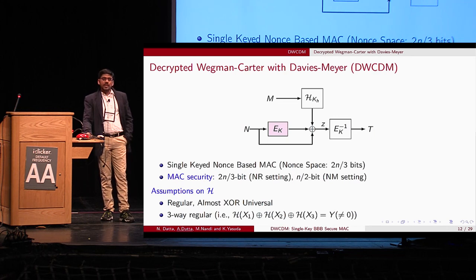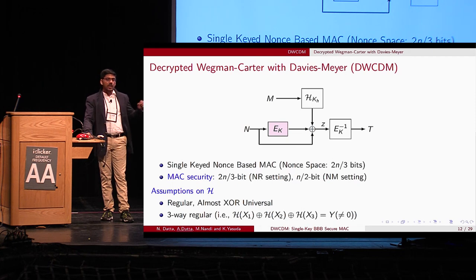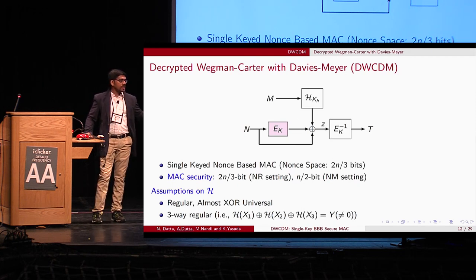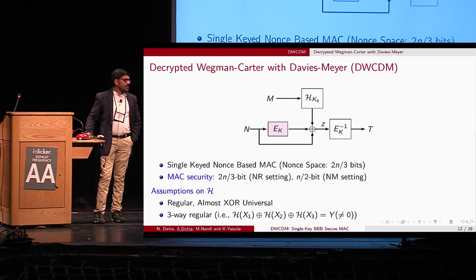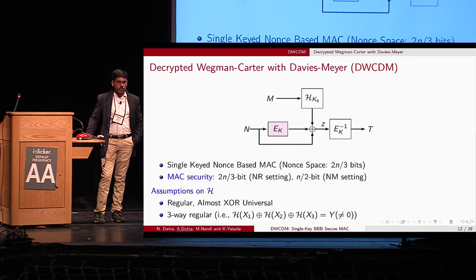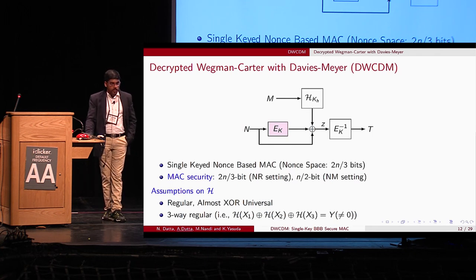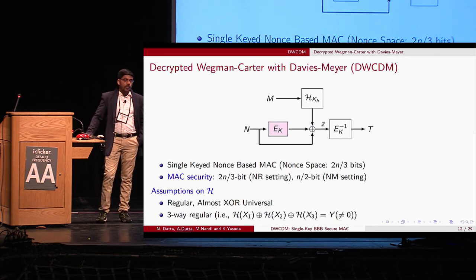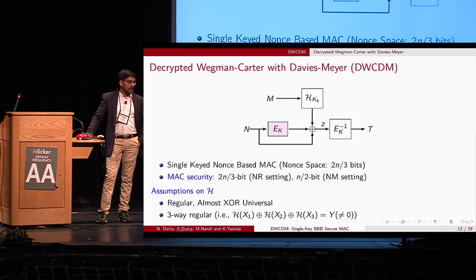The DWCDM construction is very similar to EWCDM. The only change is that the second block cipher call is replaced by its decryption call. It is a single-key nonce-based MAC, but the nonce space is 2n/3 bits, meaning the remaining n/3 bits are set to zero. We obtain 2n/3-bit MAC security in the nonce-respecting setting and n/2-bit security in the nonce-misuse setting.